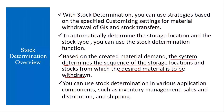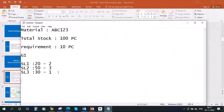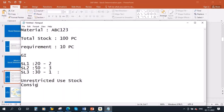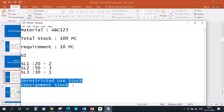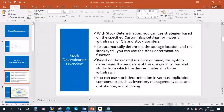Along with storage locations, you also have stock types to consider. During goods issue you can issue from unrestricted use stock or consignment stock. You configure which stock type and which storage location the system should prioritize — that is what stock determination controls.